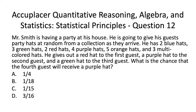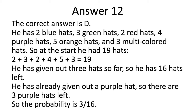Moving on to Acuplacer QAS Statistics Practice Test Question 12. The correct answer is D. Mr. Smith has 2 blue hats, 3 green hats, 2 red hats, 4 purple hats, 5 orange hats, and 3 multicolored hats, so at the start he has 19 hats in total. He has given out 3 hats so far, so he has 16 hats left. He's already given out a purple hat, so there are 3 purple hats left. The probability is 3 over 16.